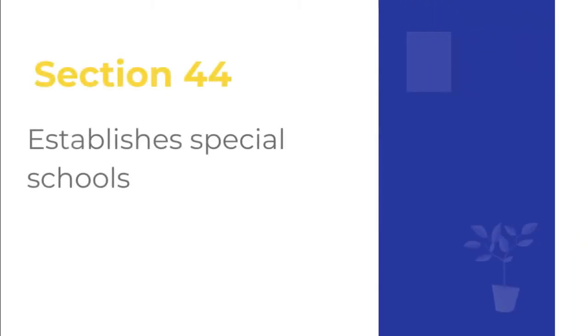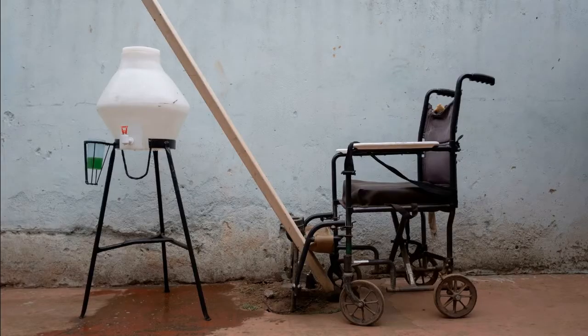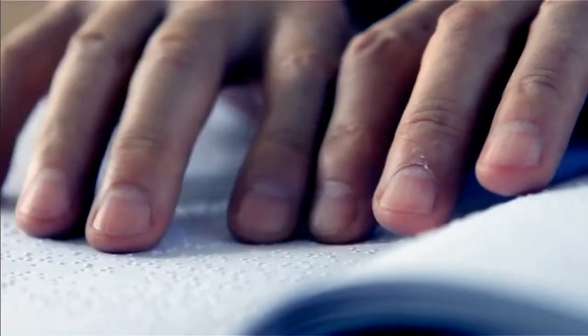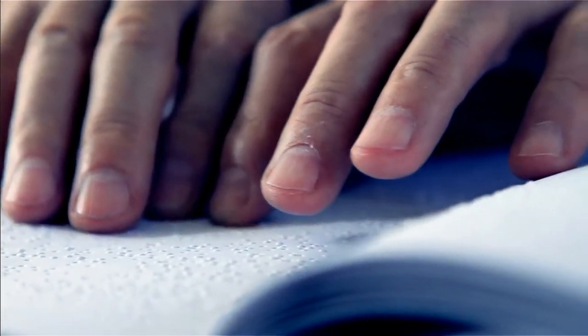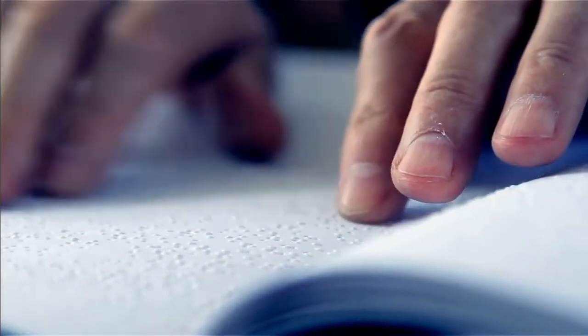Section 44 also establishes public special schools, which are to be maintained by the government to ensure all children who need them can go to school. On the other hand, the Act discriminates against children with disabilities by establishing public special schools under Part 6, Section 44 of the Act.